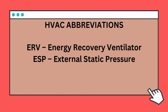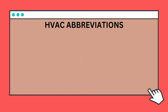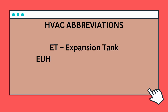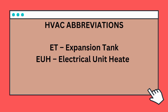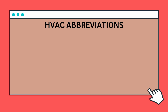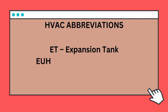ESP — External Static Pressure. ET — Expansion Tank. EUH — Electrical Unit Heater. EVAP — Evaporator.